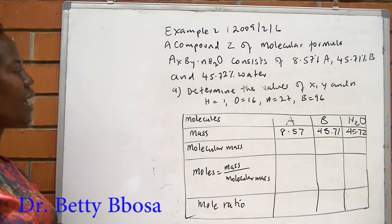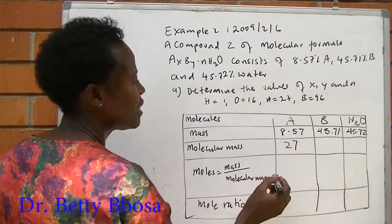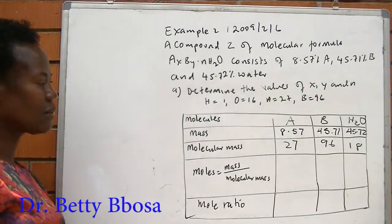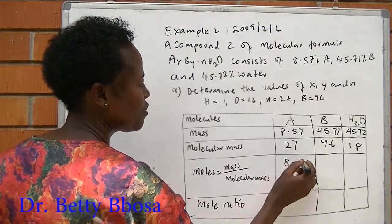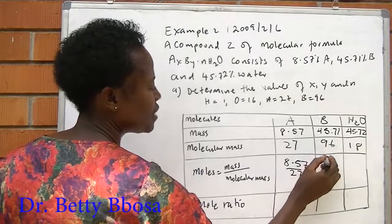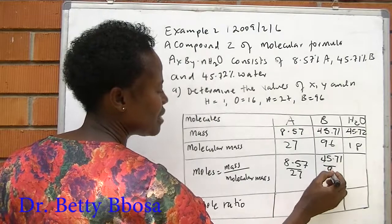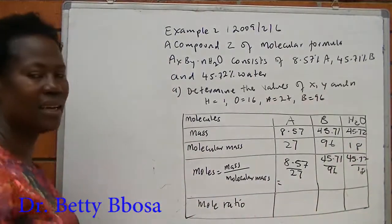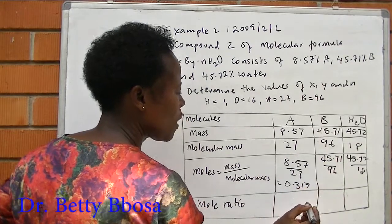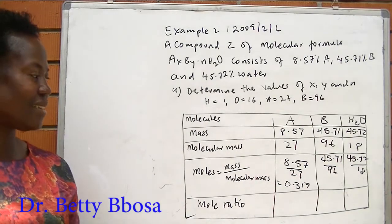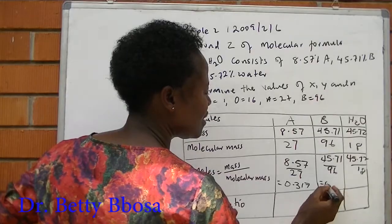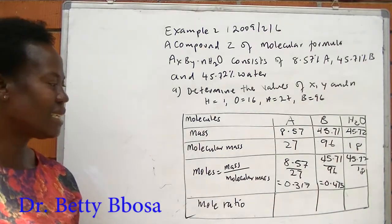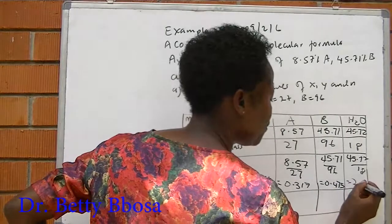The molecular mass of A is given as 27, that of B is 96, and water is 2 plus 16 which is 18. Moles, this is 8.57 over 27, 45.71 over 96, and 45.72 over 18. Here the answer is 0.317. Then 45.71 over 96, the answer is 0.475. And lastly, 45.72 over 18, the answer is 2.54.